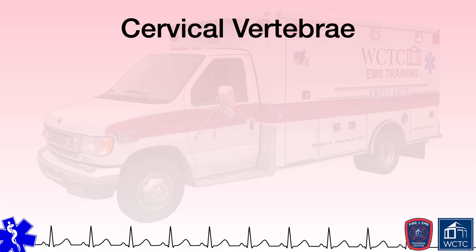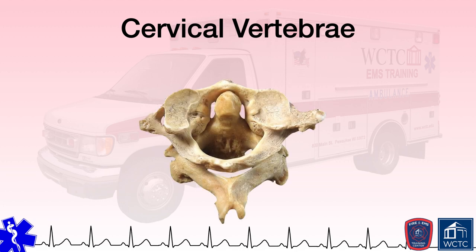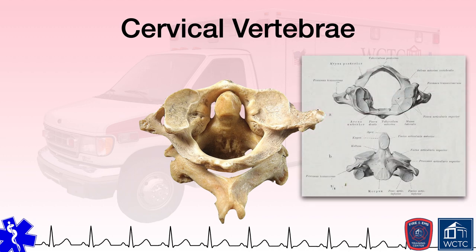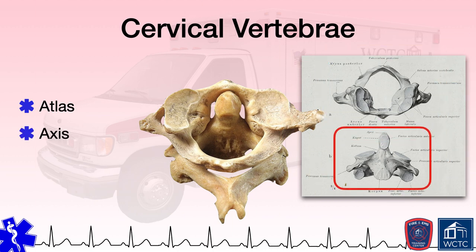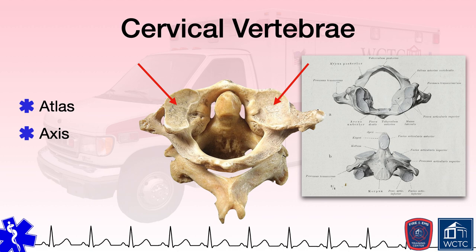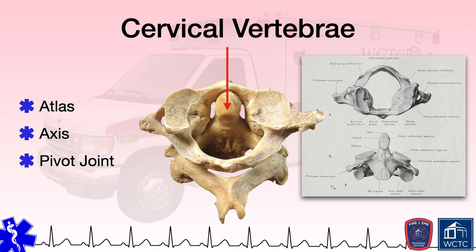The first two vertebrae in the cervical spine are unique in their design and function and have unique names. C1 is called the atlas and C2 is called the axis. The atlas has a pair of concave facets upon which the skull's occipital bones sit, forming the atlanto-occipital joint, which allows the head to tilt forward and back along with some slight lateral motion. The axis has an upward bony protuberance called the odontoid process upon which the atlas sits. This joint, referred to as the atlanto-axial joint, is what allows the head to pivot side to side. Combined, these two joints allow the head to pivot, nod, and rotate.